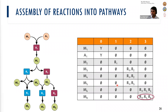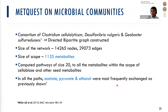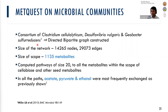This approach is scalable — we applied it to a network with 14,000 nodes and 30,000 edges, with over 1,000 metabolites being produced, looking at pathways of size 20 in a network comprising three organisms. We have now even gone up to 10 plus organisms, where we look at an entire community and remove a single organism to see what is the impact on the community.